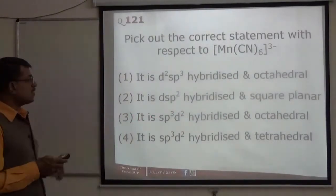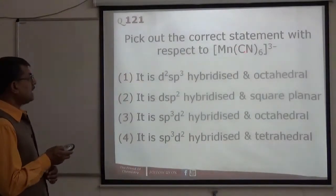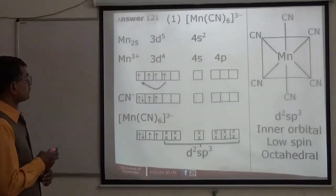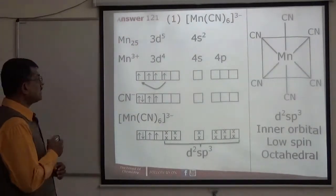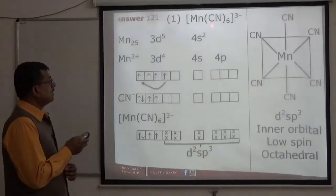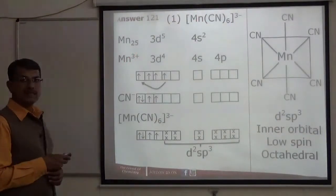The trick is cyanide is a strong ligand. Strong ligand causes pairing. When pairing occurs, inner orbital complex forms. Let's see how this happens. Manganese atomic number is 25, configuration is 3d5 4s2.